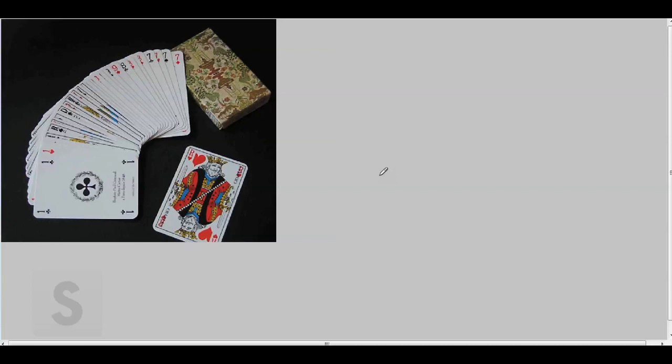There are three main processes that happen within or around meiosis that give genetic variation in a population. I like to refer to them as three different shuffles of a genetic deck. That's why we have our cards here.